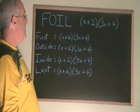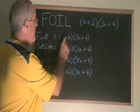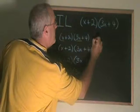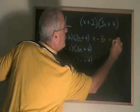The first thing to do is multiply the first terms in each binomial. The first term here is x, the first term here is 3x. x times 3x equals 3x squared.